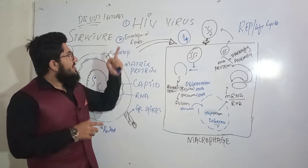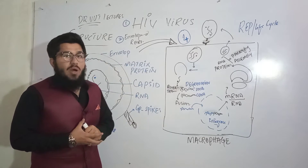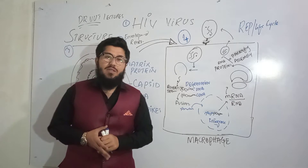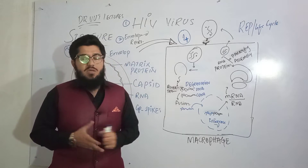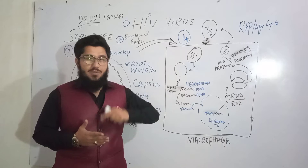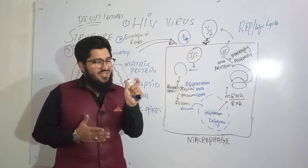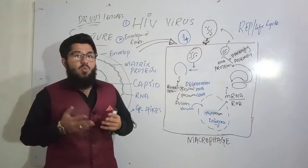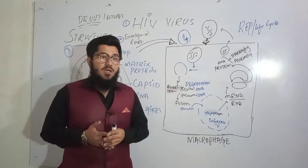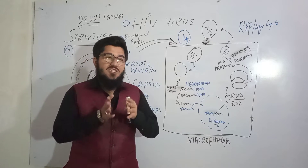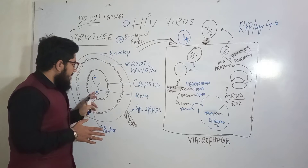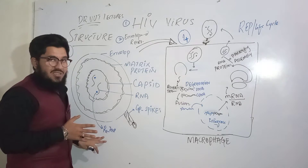Second point: this HIV virus is named as an enveloped retrovirus. Enveloped is a simple term — it refers to a virus that has an envelope. The second term is retro. Why is HIV named a retrovirus? It is named so because of a specific enzyme named reverse transcriptase.